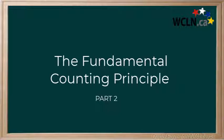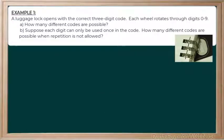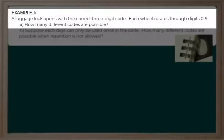Let's begin by looking at our first example. It reads: a luggage lock opens with the correct three-digit code. You can see I've got a picture of one here in the corner. Each wheel rotates through the digits 0 through 9. So, how many different three-digit codes are possible?